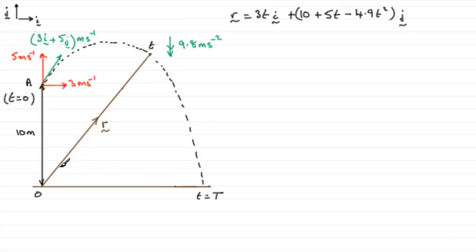Now we know the position vector r of the particle at any time t on this curve is given by the equation we found out in part a. So when the particle is here, when it hits the ground, the j component which represents the height above the ground at time t, well that's clearly got to be zero.